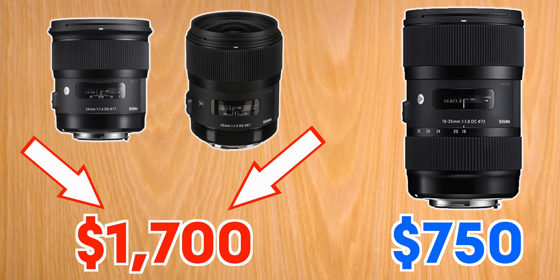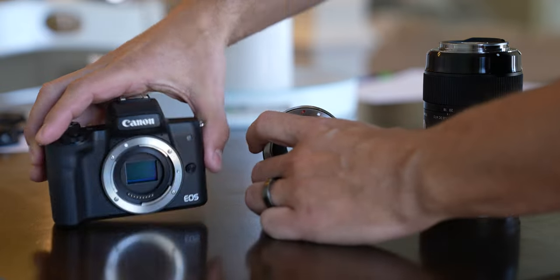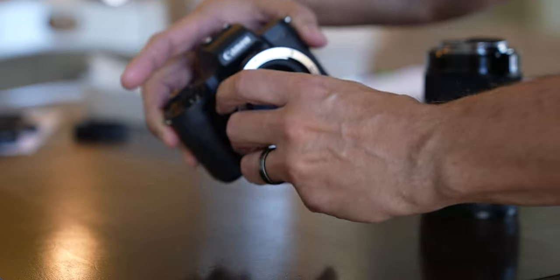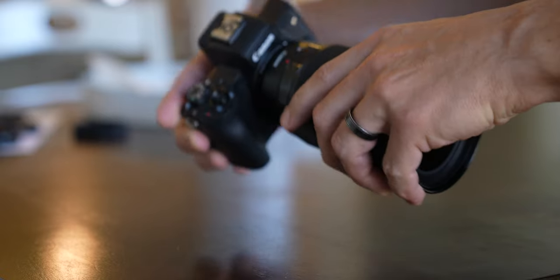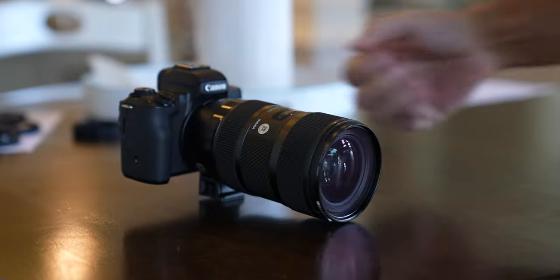Prime lenses are going to be sharper and more color accurate than a zoom lens in most cases, plus they're more expensive and you have the inconvenience of carrying multiple lenses. For example, getting the Sigma 24mm and 35mm f1.4 lenses will cost you $1,700, whereas the Sigma 18-35mm is only $750. If you want to use this zoom lens on a Canon M50 or other camera with an EF-M mount, you'll need an adapter like the Canon EF to EF-M adapter, which I'd definitely suggest because there are not many good EF-M lenses available.